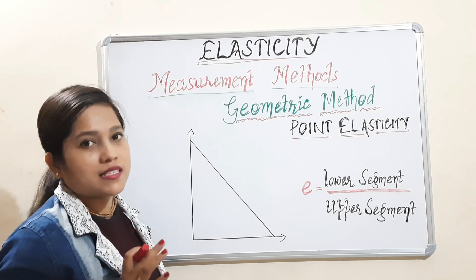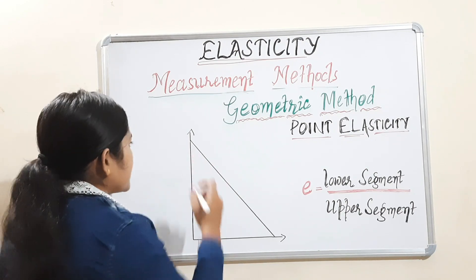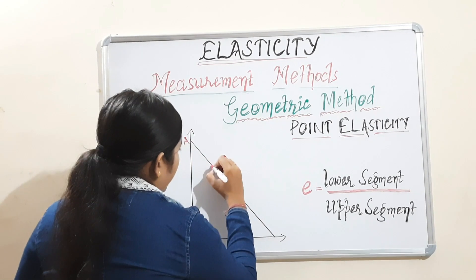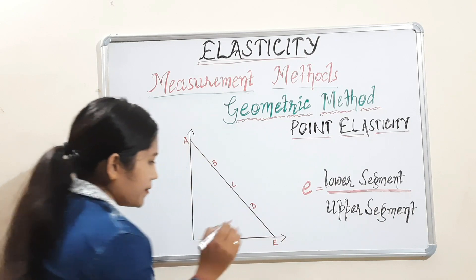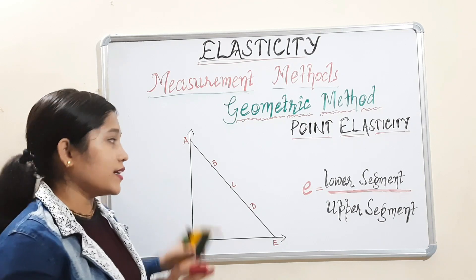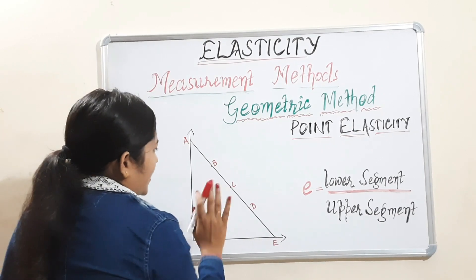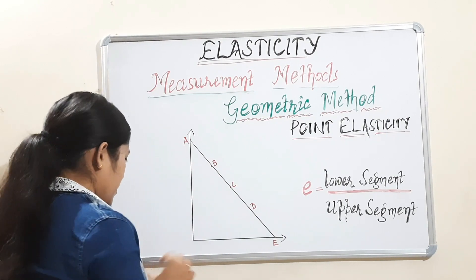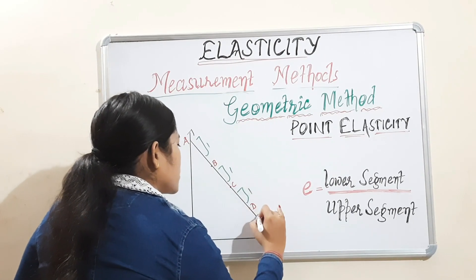Coming directly to the graph — how will we measure the point elasticity? So this is a straight line, and we will take different points. Let's say this is point A, point B, point C, point D, and point E. I have taken five points on a straight line. Before calculating, let's take every part as equal to 1. This is 1, this is 1, this part is 1, this part is also 1.